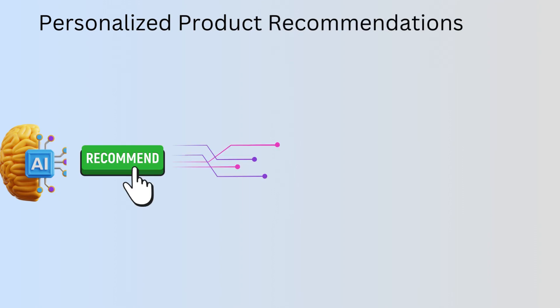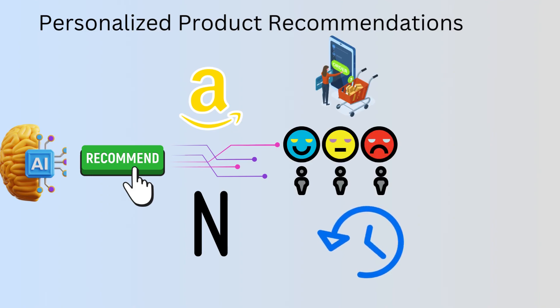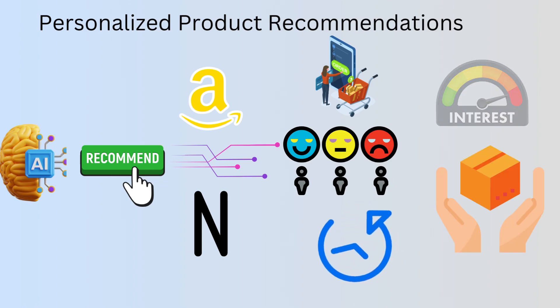AI is used to generate personalized product recommendations on websites like Amazon and Netflix. AI systems can learn about a user's preferences based on their past purchases and browsing history, and they can use this information to recommend new products that the user is likely to be interested in.